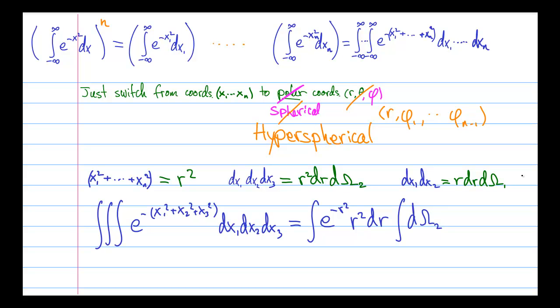Here, in three dimensions, we write d omega2, because there are two angular variables. But now it's important to understand what these d omegas actually represent.